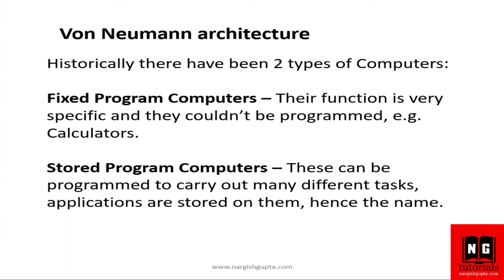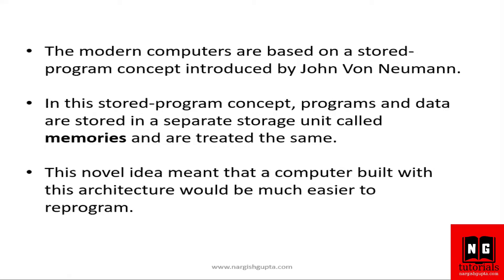For example, we can take calculators — the task which a calculator performs is very specific, so it comes under the category of fixed program computers. The next one is stored program computers, which can perform multiple tasks. We can give instructions to the computer and it can execute our instructions and give us the output. The computer systems we are using nowadays are modern computer systems.